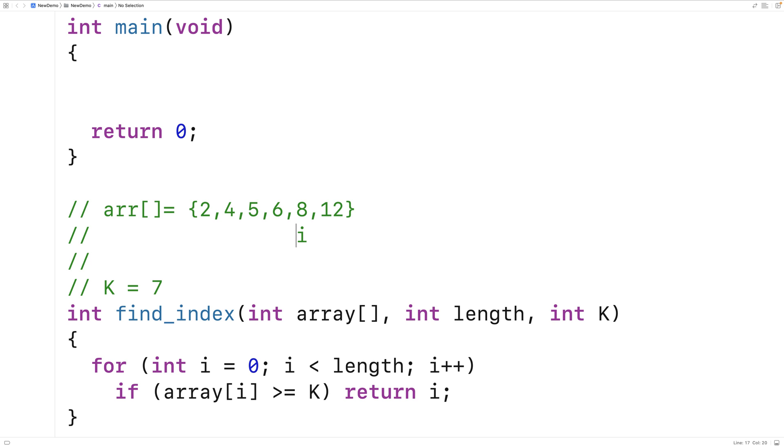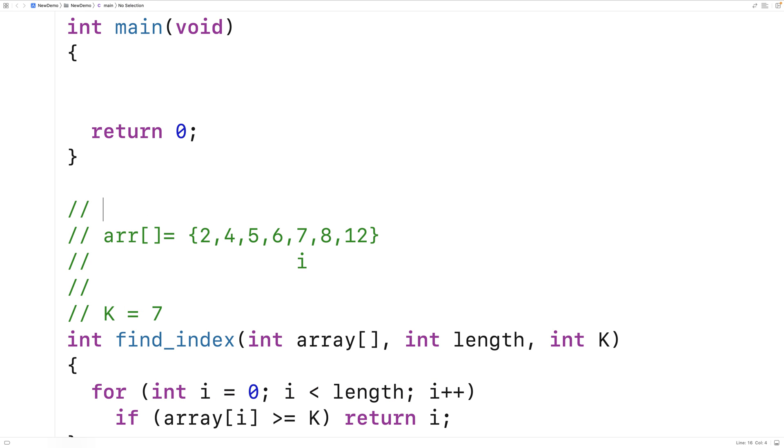And then finally, we have this array element here, 8, where it is going to be greater than or equal to K, because it's greater than K. And then we know that 7 would have to go here to keep the array sorted. So at that point, we're going to return this index. And the index in this case is going to be 0, 1, 2, 3, 4. So we're going to return 4 in that case.